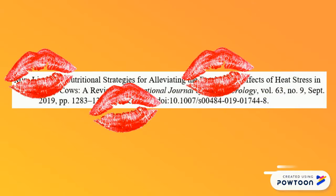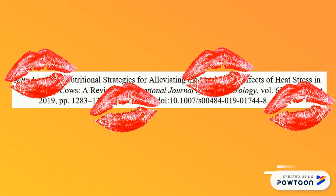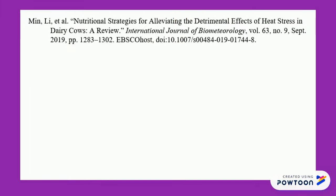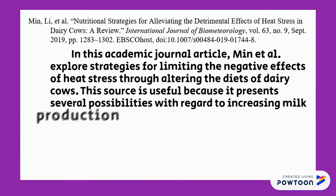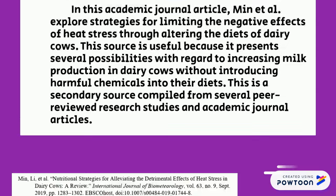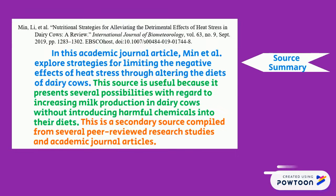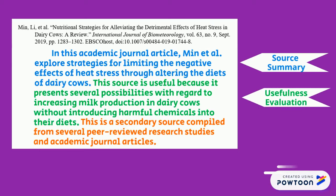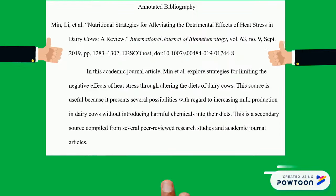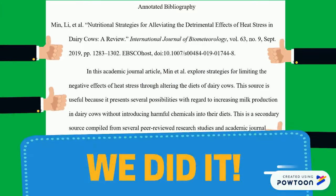Okay, your citation is looking good. Now for the annotation: directly beneath the citation, type out a paragraph including the three components mentioned earlier — a source summary, an evaluation of the source's usefulness, and the type of source. Now you have a complete annotated bibliography entry.